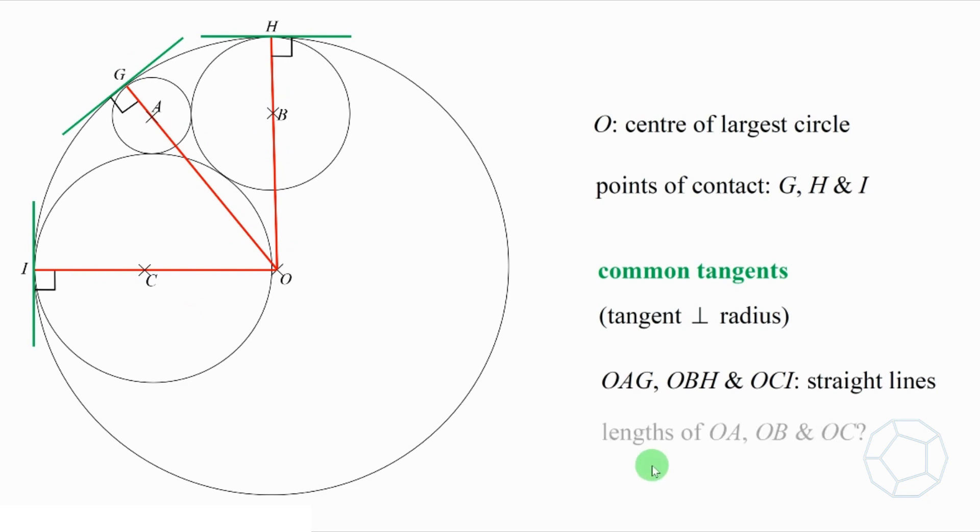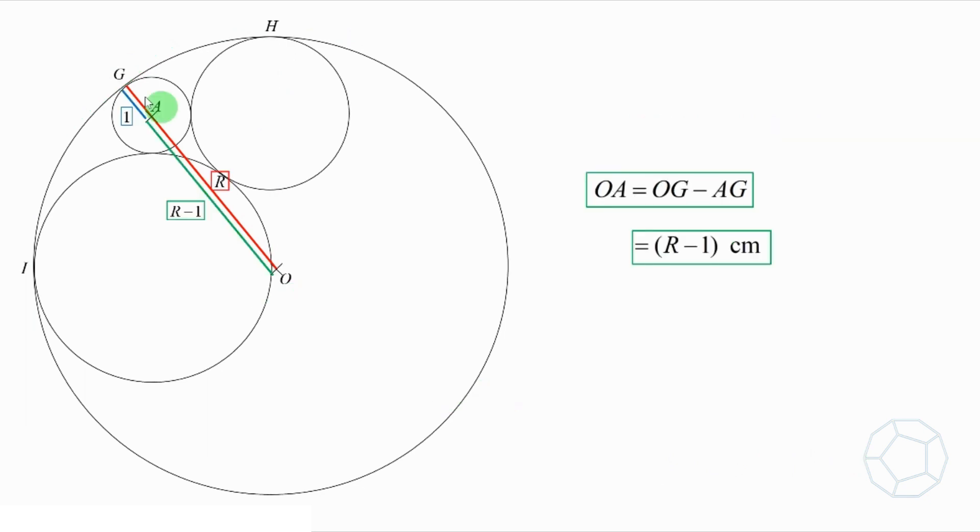What are the lengths of OA, OB, and OC? In the coming three figures, the large radius R is in red. The radii of the three smaller circles are blue, while the lengths between the centers O, A, B, and C are marked in green.